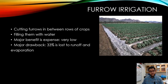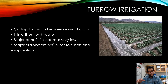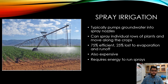Furrow irrigation is pretty cheap, which is a good reason for it to be used. It's very similar to flood irrigation, except that instead of flooding the entire field, you leave channels between plants and can water different rows at the same time. However, just like flood irrigation, there is still significant runoff, which remains a problem.